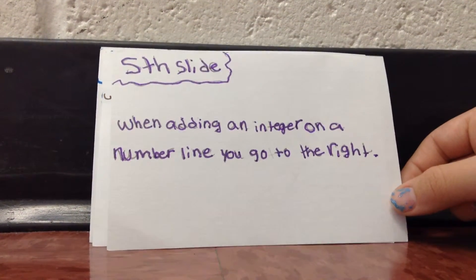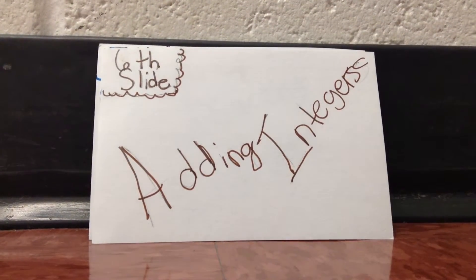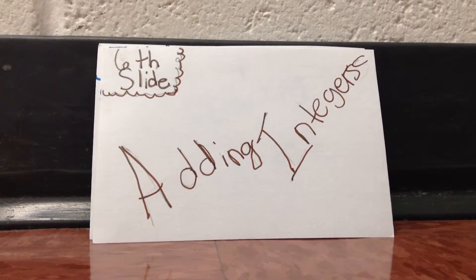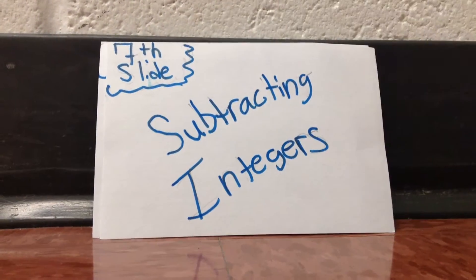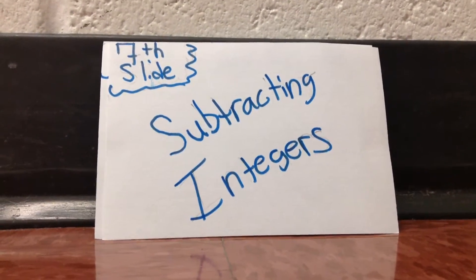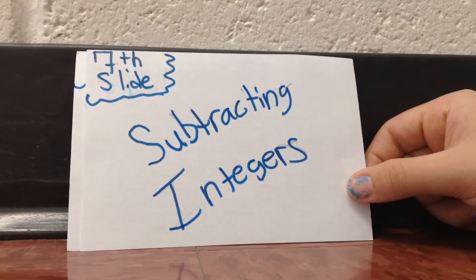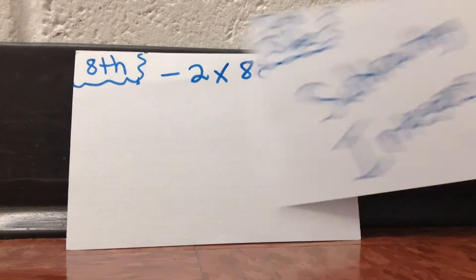When adding an integer on a number line, you go to the right. Adding integers is where you add 2 positive numbers and you get a positive answer. Subtracting integers is when you subtract 2 negative numbers and you get a negative number.